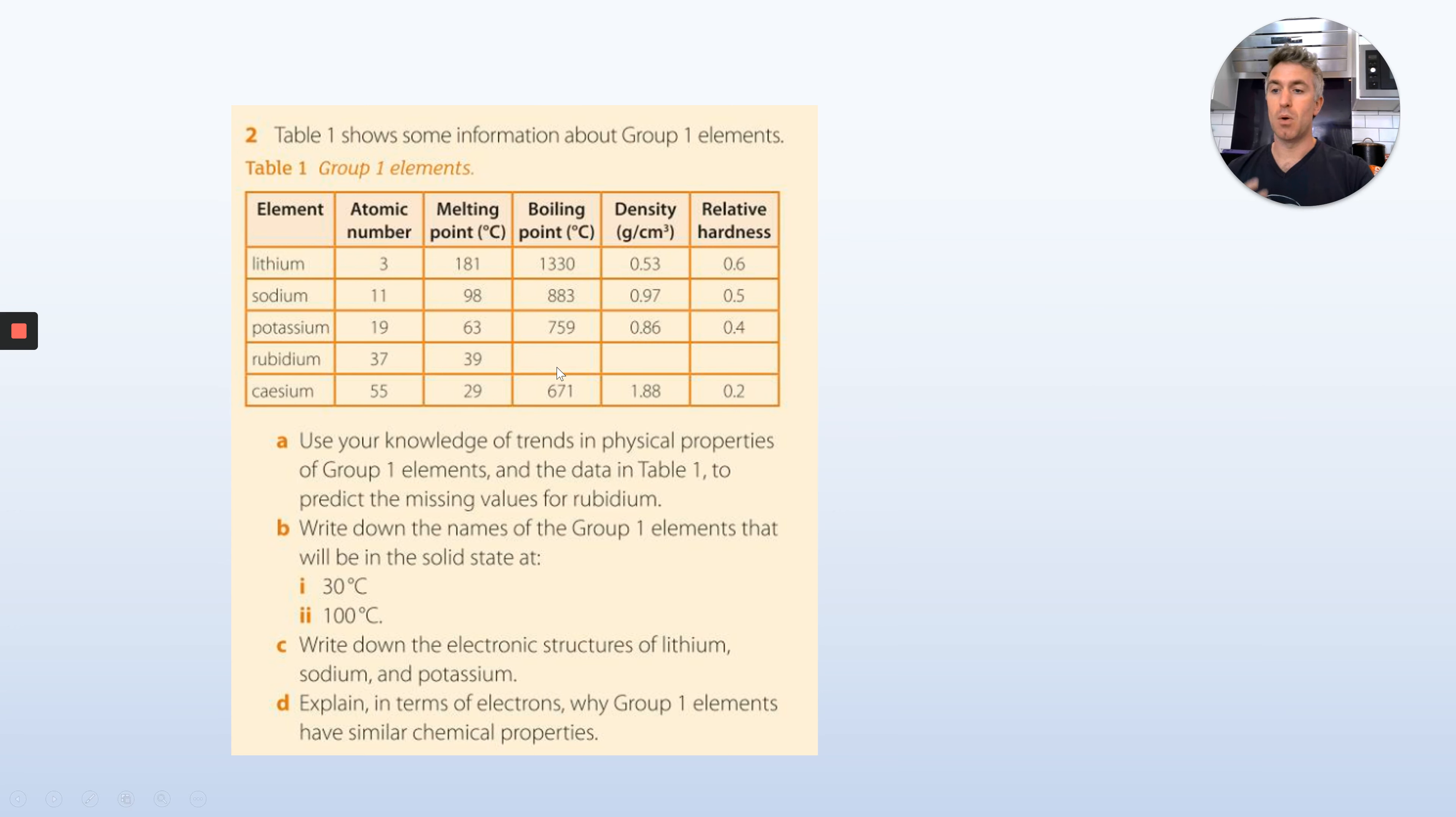Use your knowledge of the trends in physical properties of Group 1 to predict the missing values for rubidium. So those three empty boxes for rubidium, what do you think the boiling point will be, looking at what's above and what's below? What do you think the density will be? Write down the names of Group 1 elements that will be solid at 30 degrees, which of those will be solid at 100 degrees. Write down the electronic structure of lithium, sodium, and potassium. You write down electronic structures by the number, for example, 2,8,8. Explain in terms of electrons why Group 1 metal elements have similar chemical properties. We've done this before.